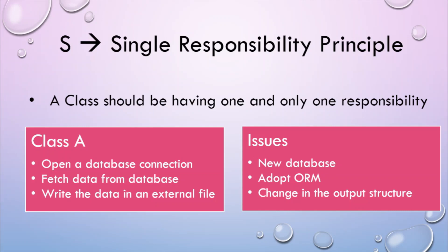As this class handles a lot of different operations, suppose any of the following changes happen in the future: a new database is introduced, or it has adopted a new ORM for managing queries on the database, or there is a change in the output structure of the query. In all those cases, the above class would be changed, which might affect the implementation of the other two operations as well. So ideally, according to SRP, there should be three classes each having a single responsibility.